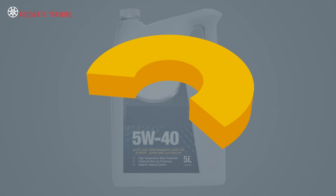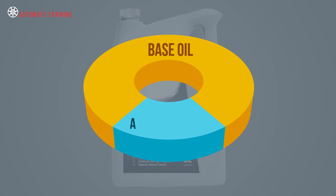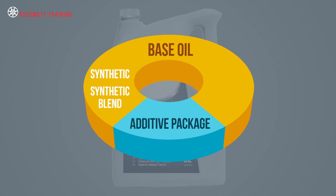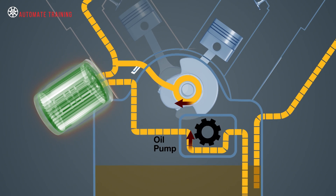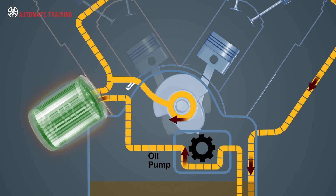The engine oil we use in our vehicles is a combination of base oil and additives. Base oils can be either synthetic, a synthetic blend, or a mineral, and will make up between 75 and 95 percent of the total engine oil, with the remaining 5 to 25 percent as a formulated additive package.